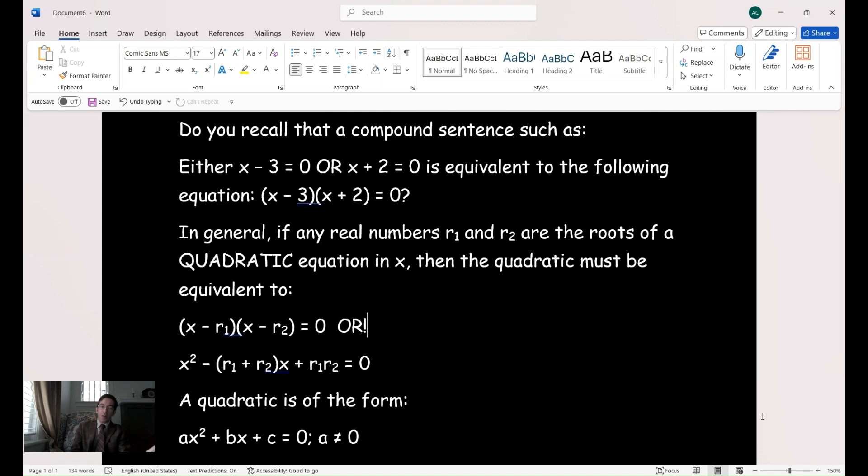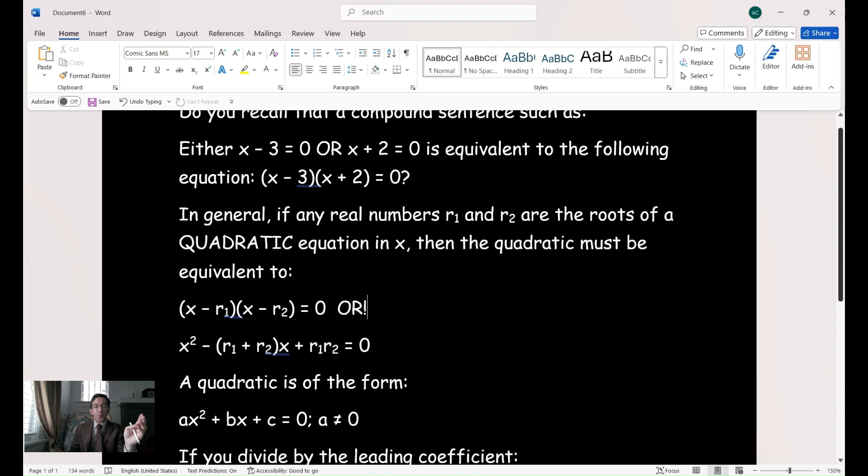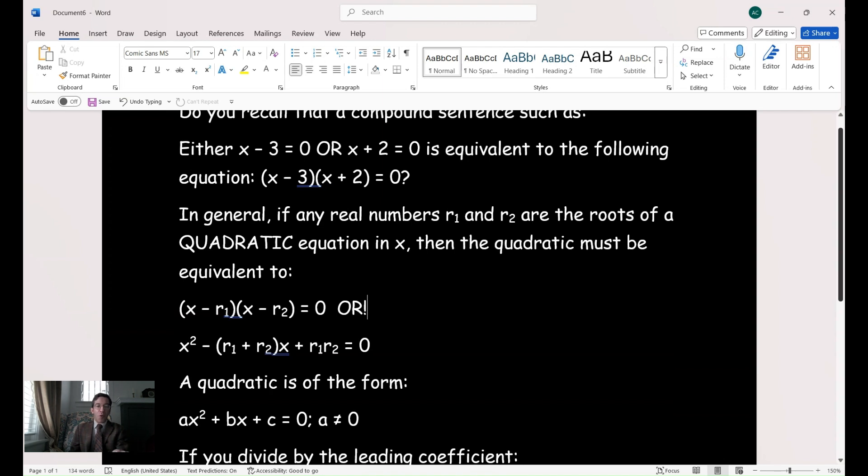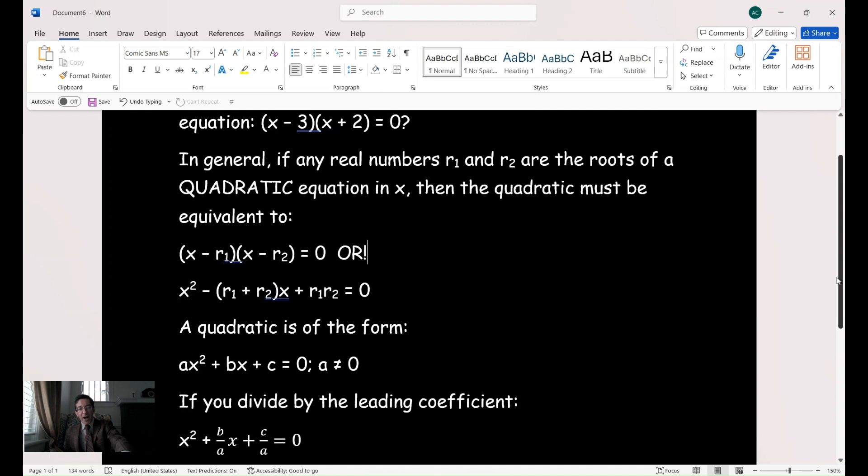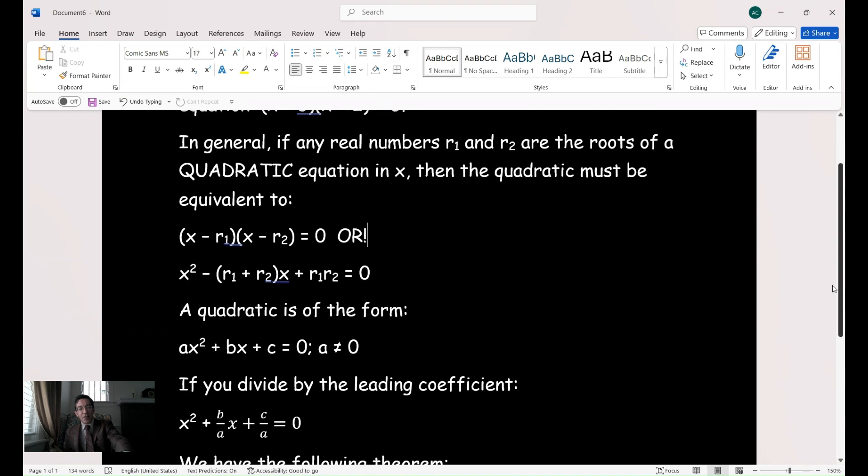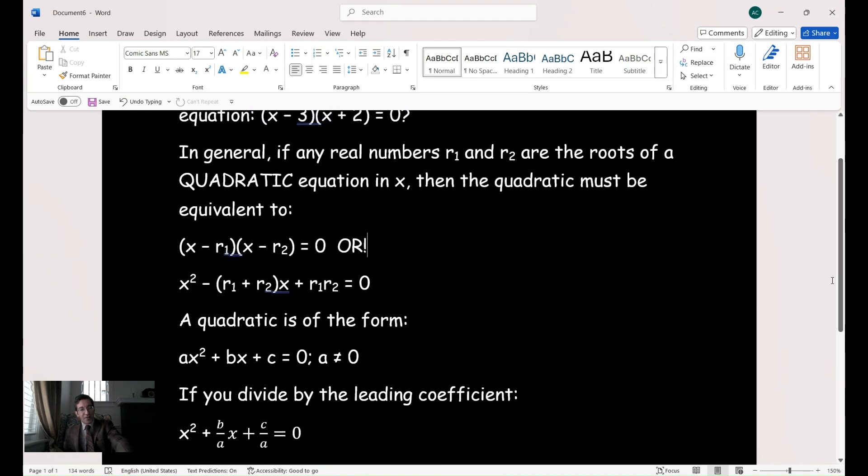Now you recall, a quadratic is of the form ax² + bx + c = 0, and a cannot be equal to zero. And therefore, if you take that same form and you divide by, remember the leading coefficient, very important vocabulary, the leading coefficient here is a. And if you divide by a, you get something that looks like this: x² + (b/a)x + (c/a) = 0. And you now have the crowning jewel of all of this, which is the following theorem.